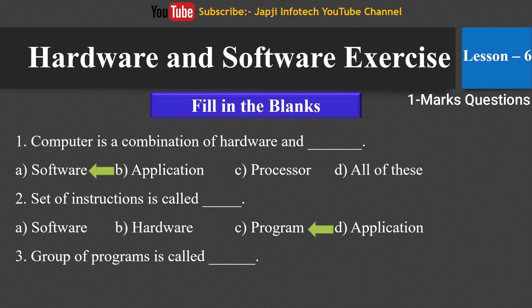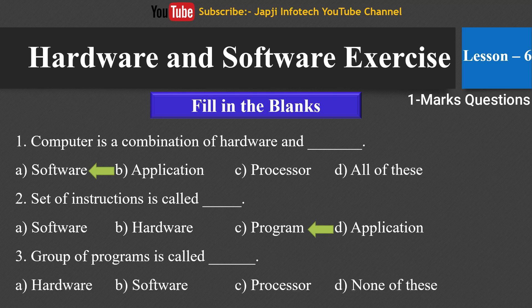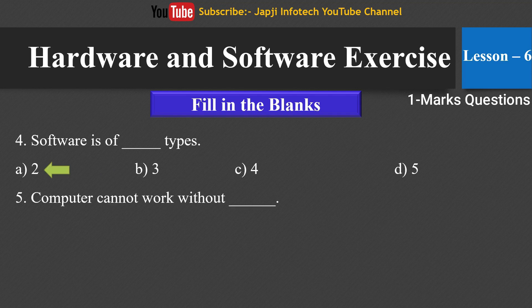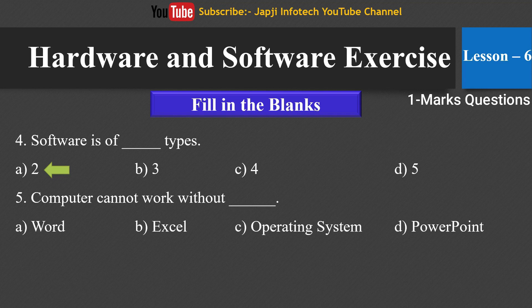The third fill in the blank is: a group of programs is called ___. The options are hardware, software, processor or none of these. The right answer is: a group of programs is called software. The fourth fill in the blank is: software is of ___ types. The options are two, three, four or five. The right answer is: software is of two types. The fifth fill in the blank is: a computer cannot work without ___. The options are Word, Excel, operating system or PowerPoint. The right answer is: a computer cannot work without an operating system.